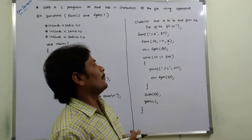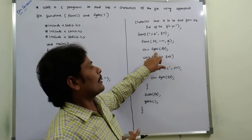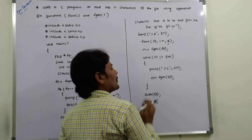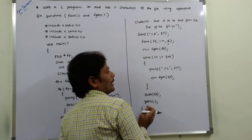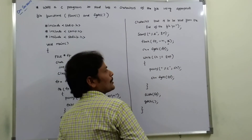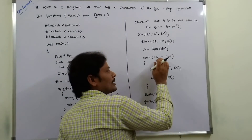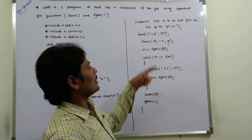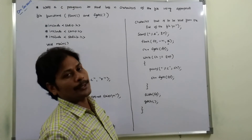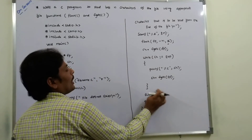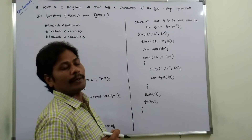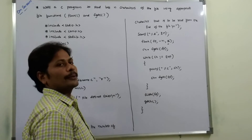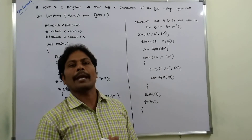While ch is not equal to EOF, if the fgetc function reads a character from the file and it is not the end of file, it prints the character, then increments the file pointer by reading the next character. This procedure repeats until all N characters have been read and displayed on the screen. After that we close the opened file with fclose, then getch(). This completes the program. Thank you for watching this video.